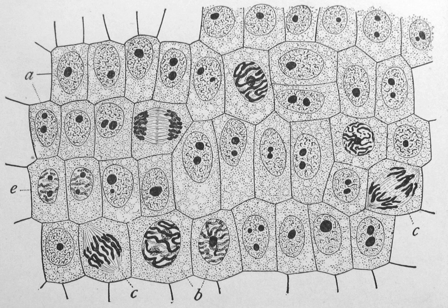Cell division involves a single cell called a mother cell dividing into two daughter cells. This leads to growth in multicellular organisms and to procreation in unicellular organisms. Prokaryotic cells divide by binary fission, while eukaryotic cells usually undergo a process of nuclear division called mitosis, followed by division of the cell called cytokinesis. A diploid cell may also undergo meiosis to produce haploid cells, usually four. Haploid cells serve as gametes in multicellular organisms, fusing to form new diploid cells. DNA replication always happens when a cell divides through mitosis or binary fission, occurring during the S phase of the cell cycle.